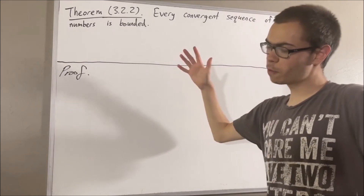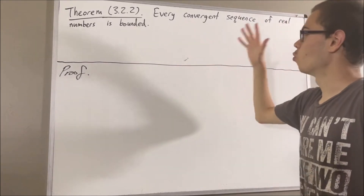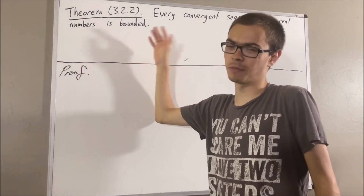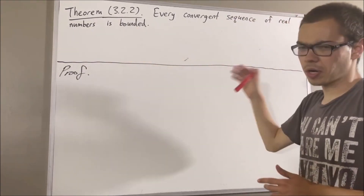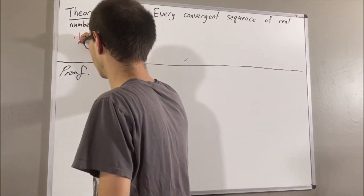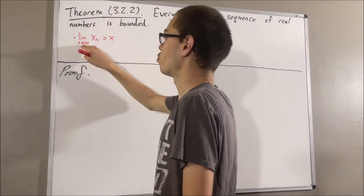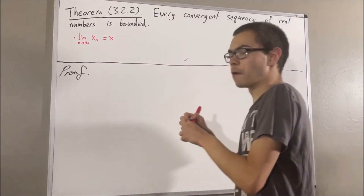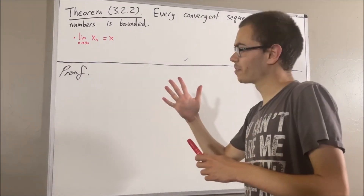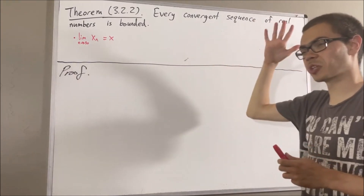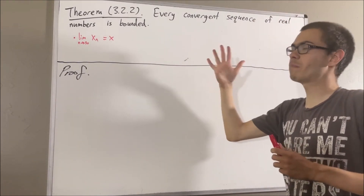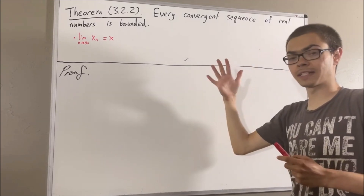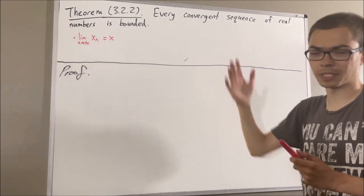Before we get into the proof, let's remind ourselves what a convergent sequence of real numbers is. To say that the limit as n approaches infinity of xn is equal to x means: for every epsilon greater than zero, there exists a positive integer k, such that for all positive integers n greater than k, the absolute value of xn minus x is less than epsilon.